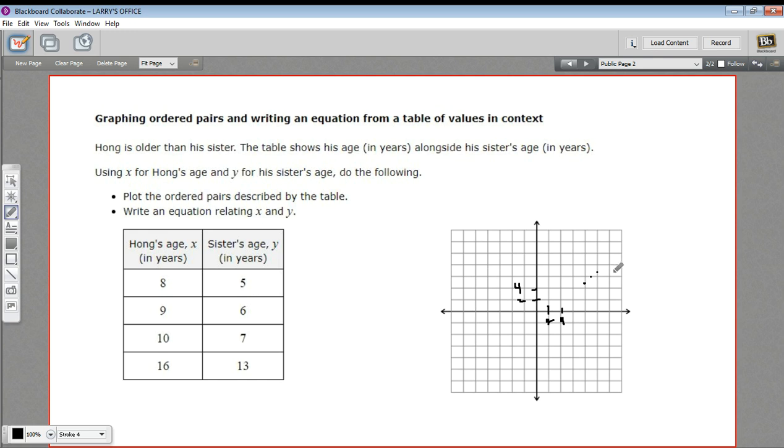And then we want 16 and 13. So two, four, six, eight, ten, twelve, fourteen, sixteen—not quite big enough, this graph. And 13: two, four, six, eight, ten, twelve. So right about there.